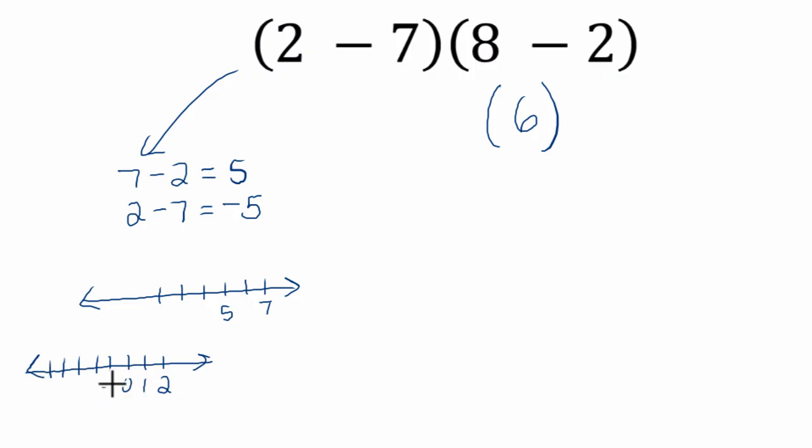That's 1, 0, negative 1, negative 2, negative 3, negative 4, negative 5. So 7 minus 2 is 5, and 2 minus 7 is negative 5. Isn't that nice?